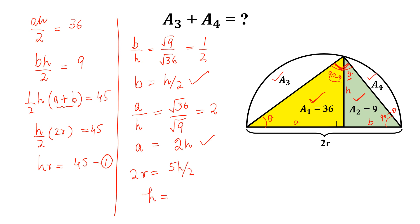Now we will put this value 4r by 5 in equation 1. So we will get r into 4r by 5 equal to 45, and this implies r square equal to 5 into 45 divided by 4. So how to calculate A3 and A4?